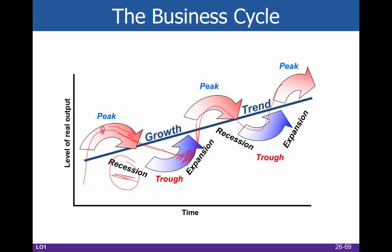Then we have this period called expansion, where the economy grows. I typically call it recovery at this point, because it's hard to imagine when you are down here that this is really economic expansion. Once you get higher than you were previously, then it makes sense to call this expansion. But down here we just kind of call it recovery. Then you get to your other peak again and it just continues on and on. This becomes your line of best fit, and depending on what kind of investor you are, you might care a lot about these various peaks and valleys, or you might only really care about the general line of best fit.